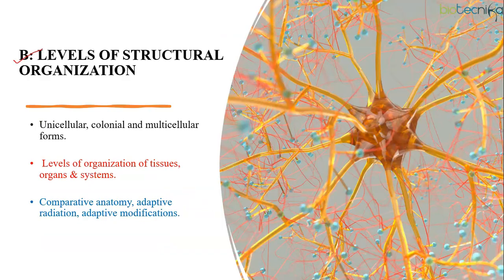Subunit B is about levels of structural organization. Here you study about unicellular, colonial and multicellular forms, and the cellular, tissue, organ, and organ system levels. You also study about the digestive system — whether it is complete or incomplete — and circulatory system — whether open or closed. From an exam point of view, this particular topic is very, very important and questions are most frequently asked from it. Questions can also be asked from comparative anatomy, adaptive radiation and adaptive modifications, but not very frequently.